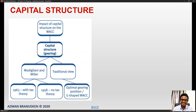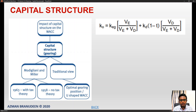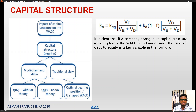How exactly, or to what extent, are you going to have debt versus the extent of equity that you are going to use as funding for your company? As far as capital structure is concerned, we talk about the impact of capital structure on the weighted average cost of capital. We also look at various perspectives, especially Modigliani and Miller's view with tax and without tax, and the traditional view in terms of the optimal gearing position.